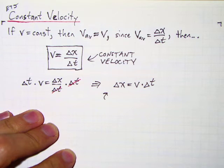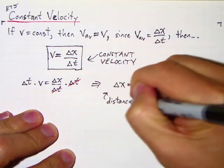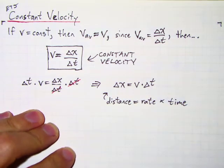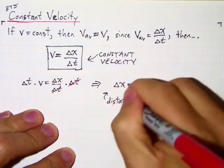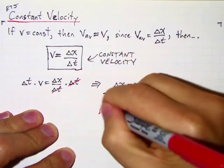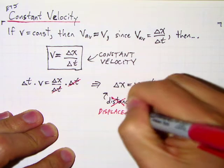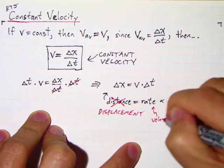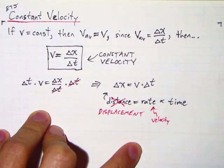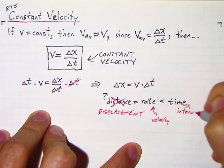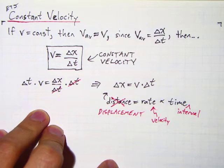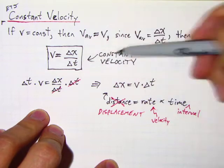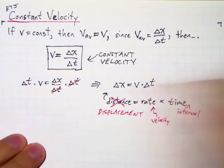This is in a form that should be pretty familiar. In previous classes you might have heard this described as the distance equals rate times time equation. Except now we know this is not distance correctly — we call this the displacement. It's the change in position, not the distance traveled. So displacement equals velocity times time interval — and by time we really mean the time interval. Displacement equals velocity times time interval if the velocity is constant. This equation is not true if the velocity is not constant.